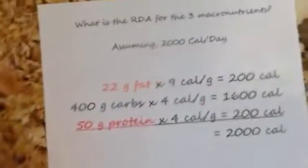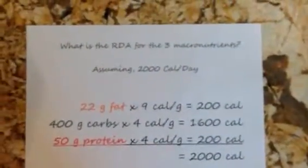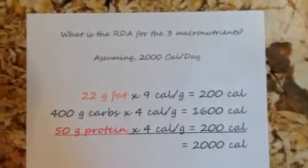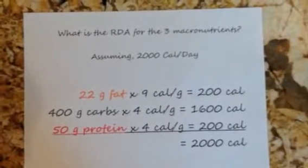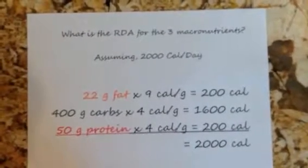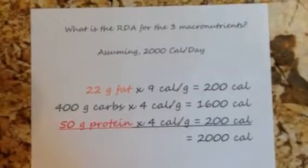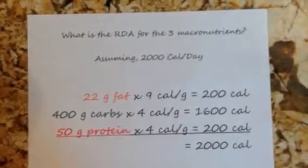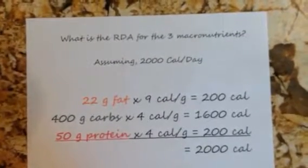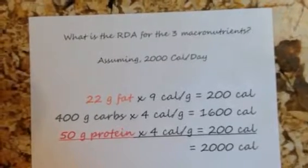When we eat a whole foods, plant-based diet, we don't have to count calories. We don't have to look at grams. We don't have to figure out how much we need of anything, because if we're eating the right foods, we're getting all that we need. But I did want to show you this because when we look at nutrition labels, I want you to understand how much fat we should be getting. The recommended daily allowance covers the three macronutrients: fat, carbs, and protein.